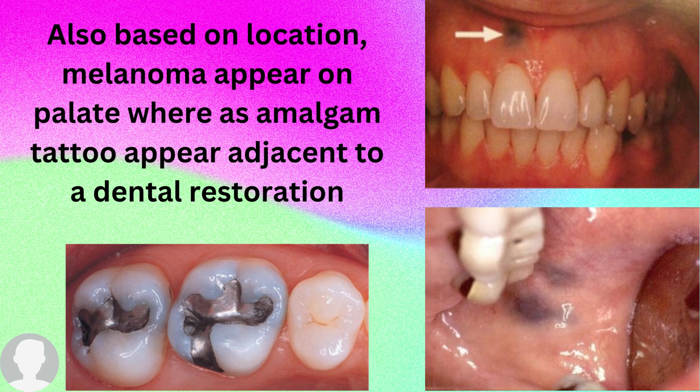For example, if the lower six has an amalgam restoration, the gums opposite to that tooth will likely have an amalgam tattoo. That is the typical location of amalgam tattoo, in comparison with melanoma which occurs on the palate.